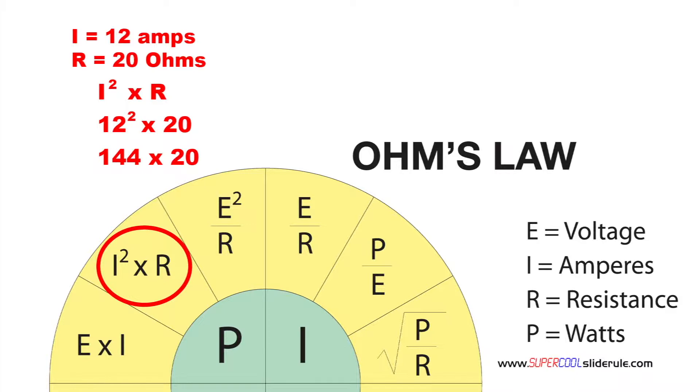Next we multiply 144 by our resistance of 20. The answer is 2880. So 12 amps at 20 ohms resistance will be equivalent to 2880 watts.